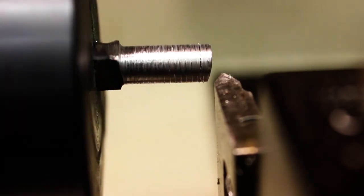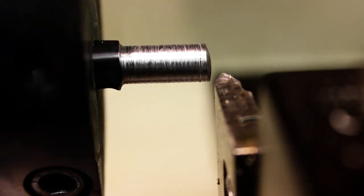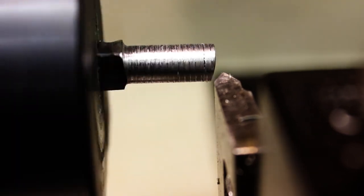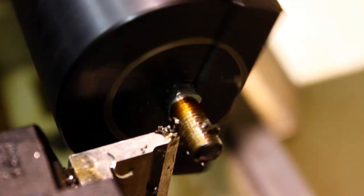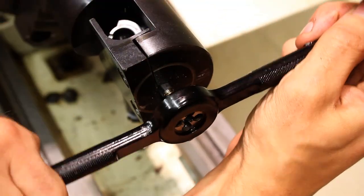Some gunsmiths and hobbyists have a die holder that fits directly into their tailstock to allow for dead center threading. Others choose to use a threading tool on their lathe. I generally start my cut on the lathe and then chase the threads with the die to save time.